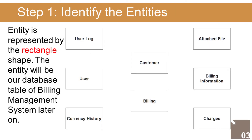Step 1: Identify all entities. An entity is represented by the rectangle shape. The entity will be our database table of the billing management system later on. In the billing management system we have the following entities: 1. User, 2. User log, 3. Customer, 4. Billing, 5. Billing information, 6. Attached file, 7. Charges, 8. Currency history.